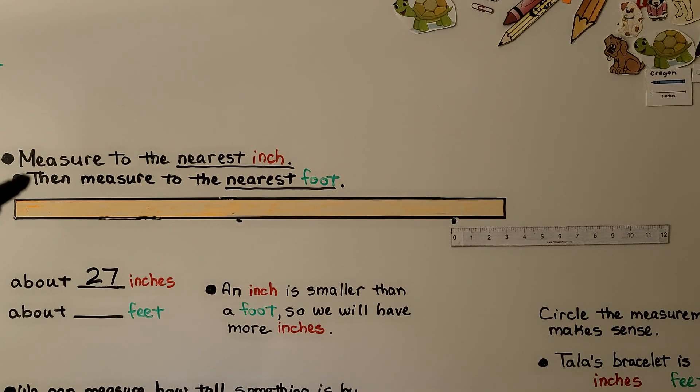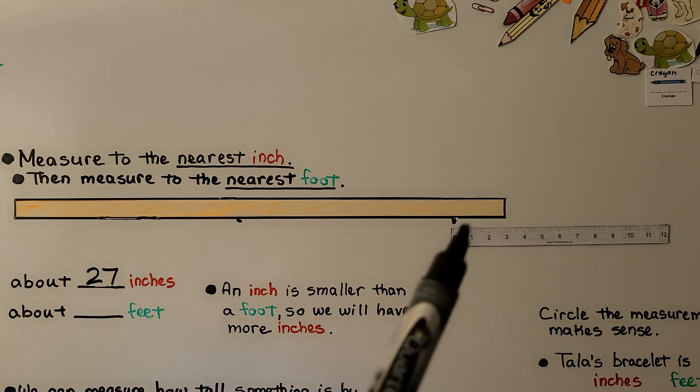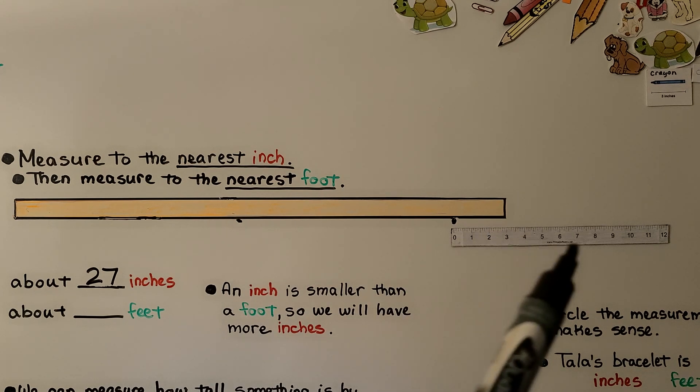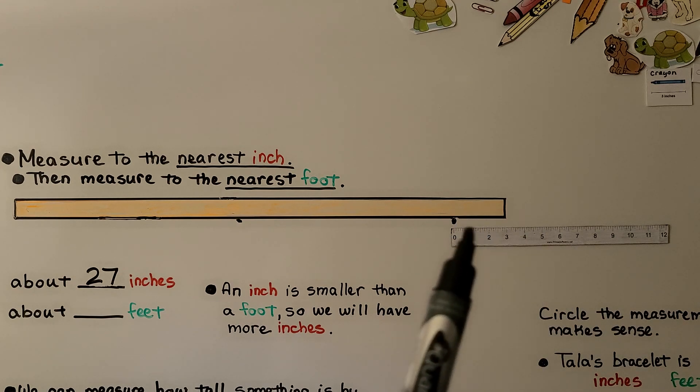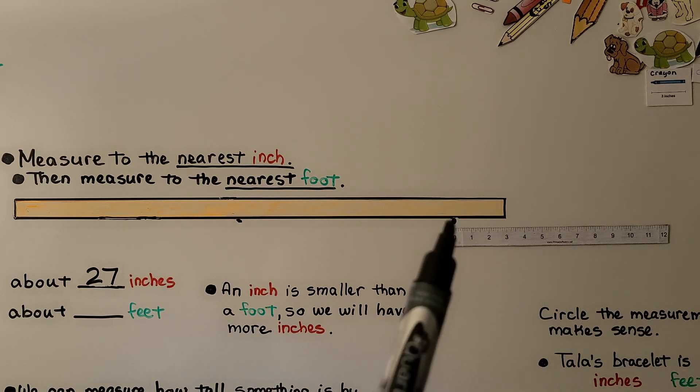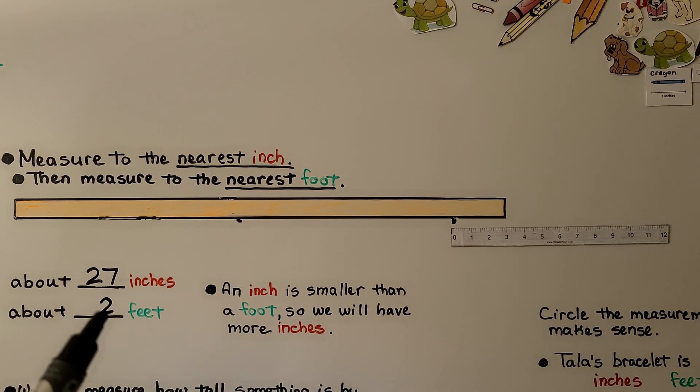Measuring to the nearest foot, we have 1 foot, 2 feet, and this little piece. If we were to go to the end of our ruler, that would be 3 feet. We can say it is closer to 2 feet than to 3 feet, which means it's about 2 feet long. An inch is smaller than a foot, so we have more inches - many more inches than we have feet.